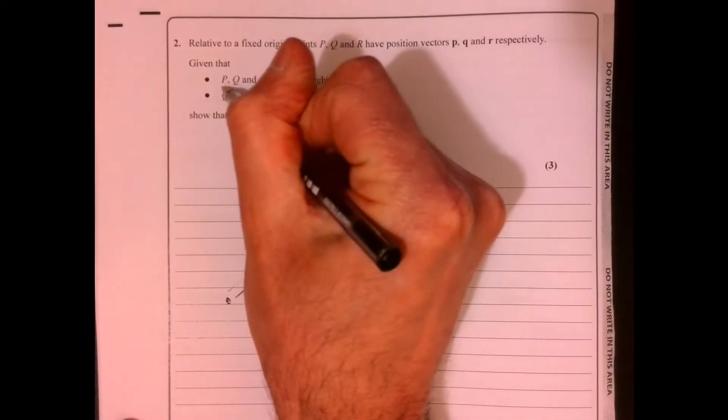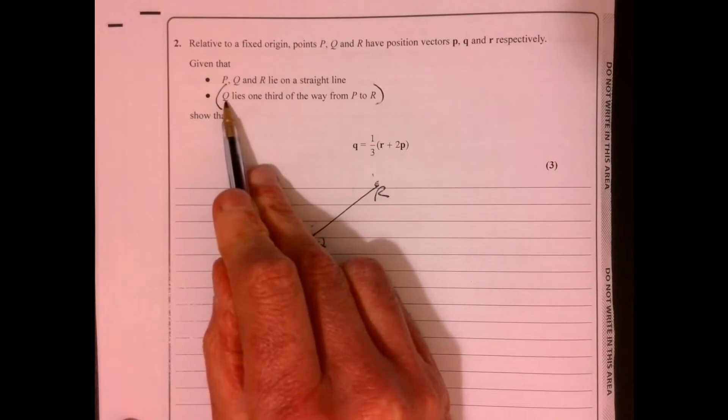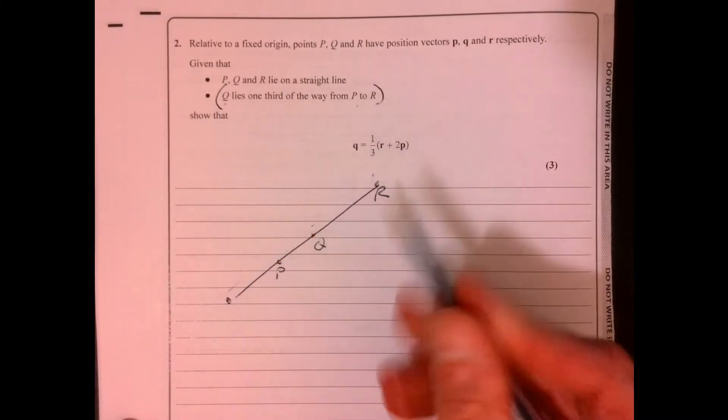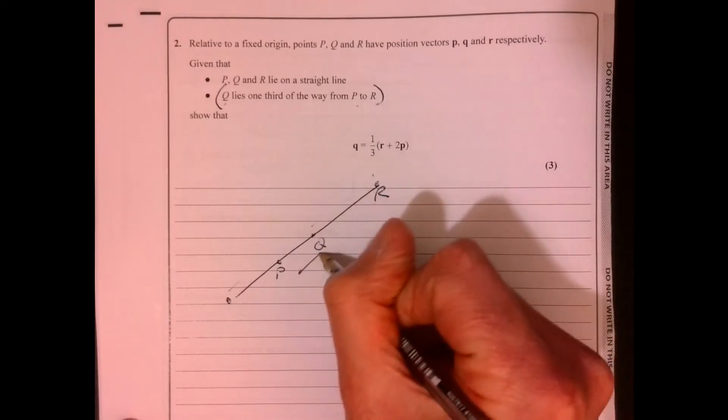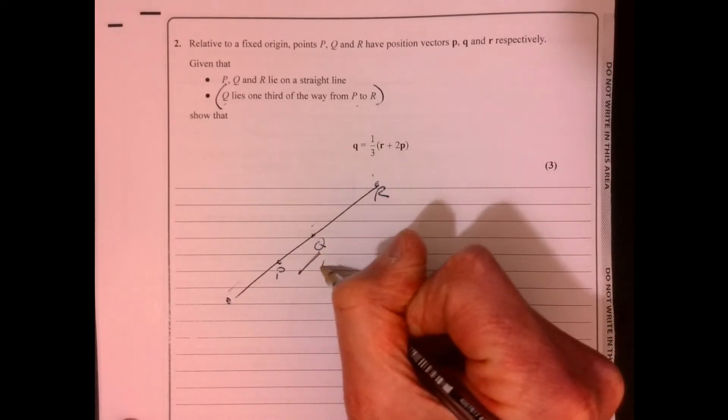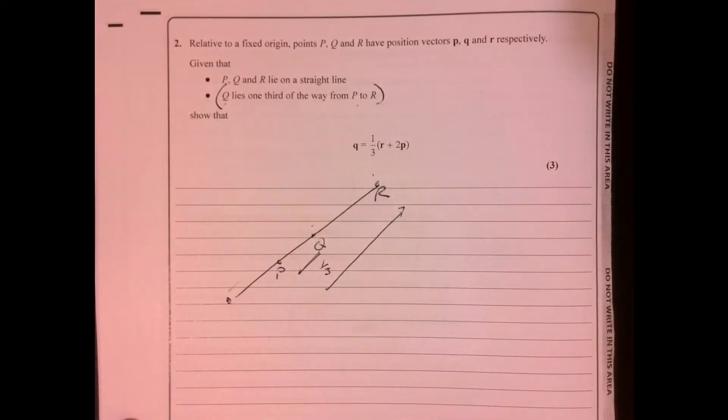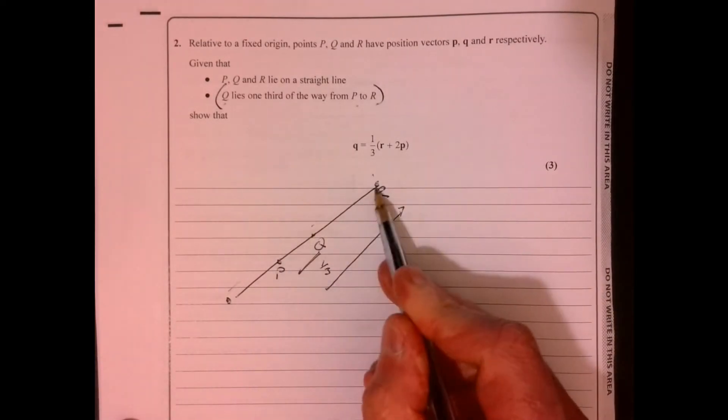So what's the other bit of information it tells me? So it tells us that Q lies one third of the way from P to R. So this bit here is one third of that bit. That's PR, isn't it?